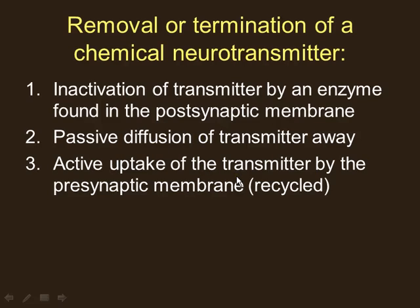The second way to remove a neurotransmitter is diffusion — the ends of the synapse are open, so neurotransmitters can simply diffuse out into the interstitial fluid. Astrocytes can vacuum them up and recycle them. The third way is enzymatic destruction — an enzyme in the synapse breaks down the neurotransmitter, cleaning up the synapse.